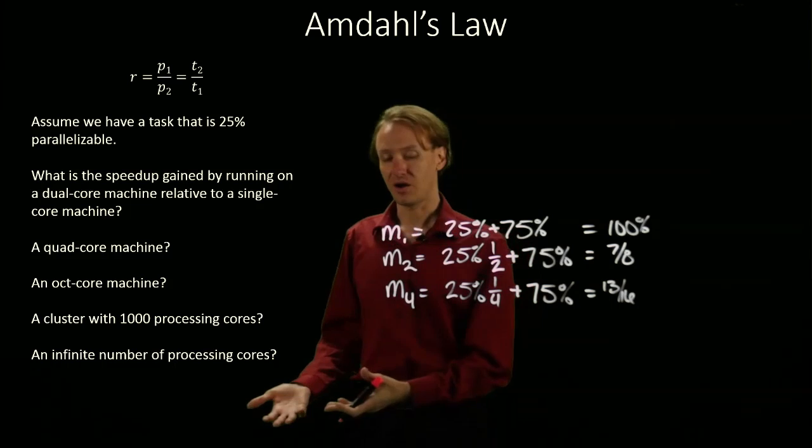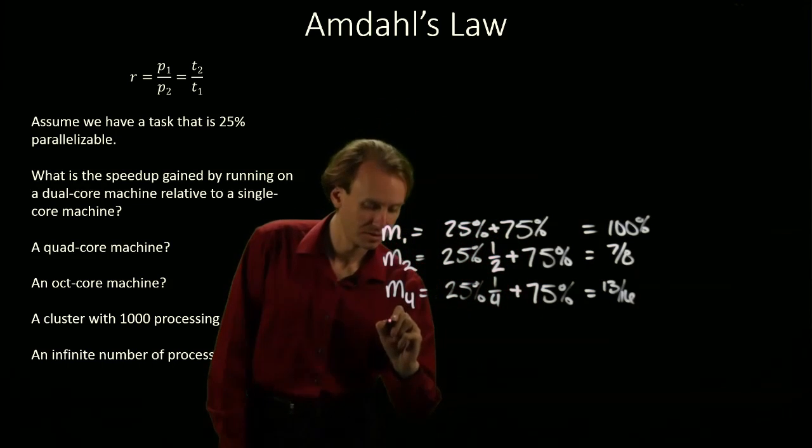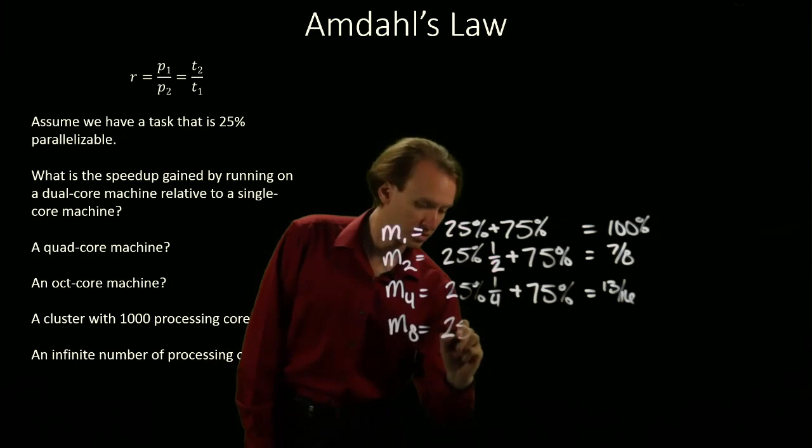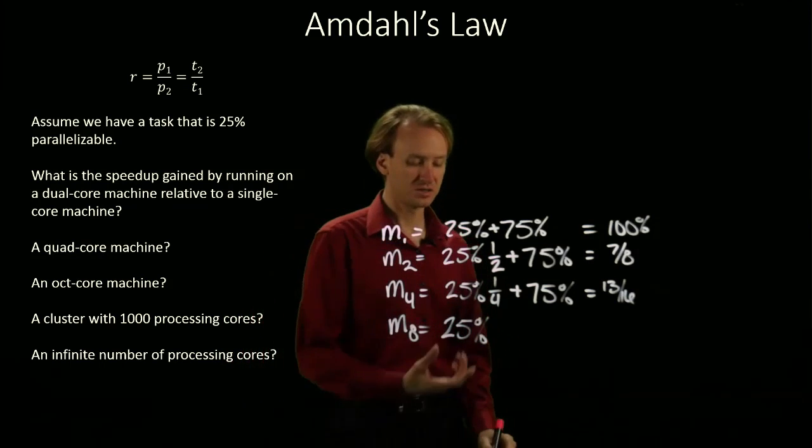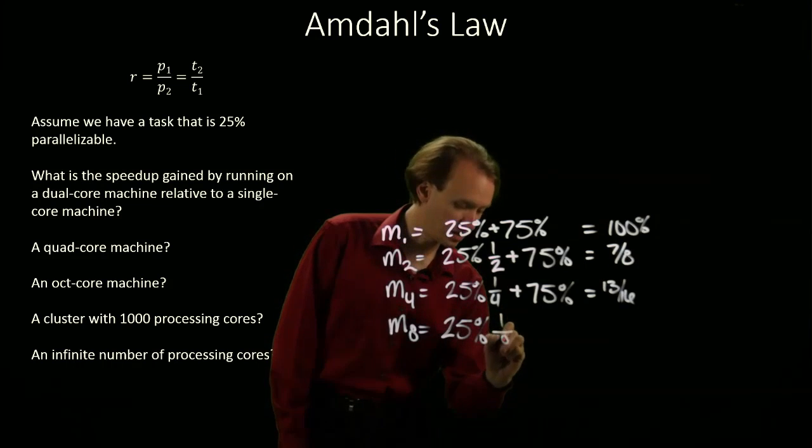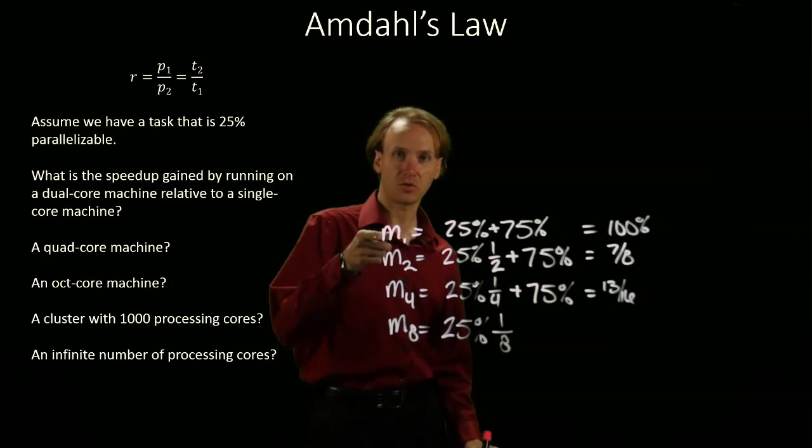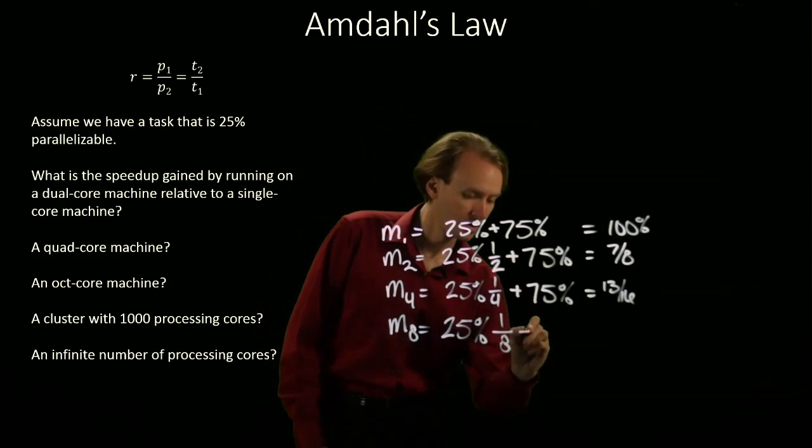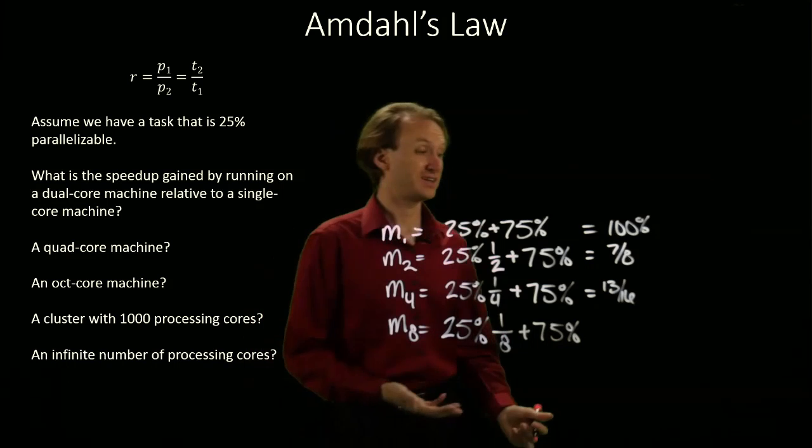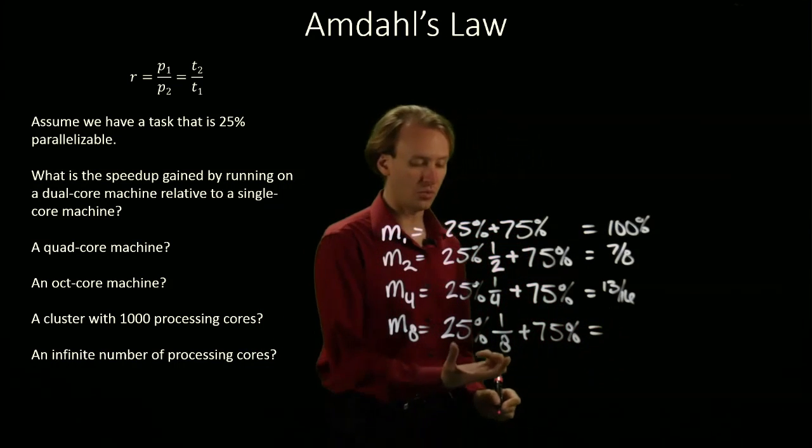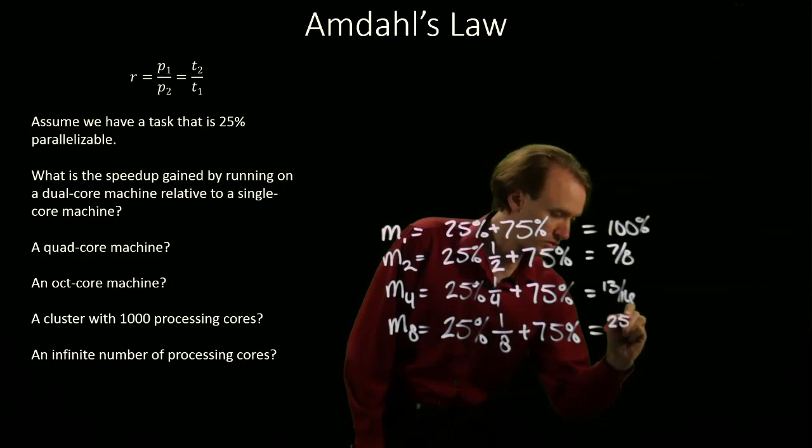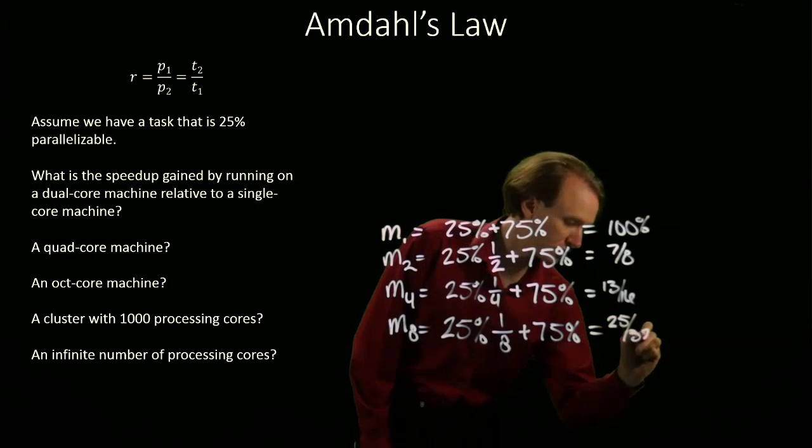Next, I'm going to see this on an oct-core machine. Again, I've got 25% for my parallelizable code, and it's now taking 1/8 the amount of time it did on the single core machine. But I've still got this 75% that's unaffected. I've got 1/32 plus 3/4, which gives me 25/32.